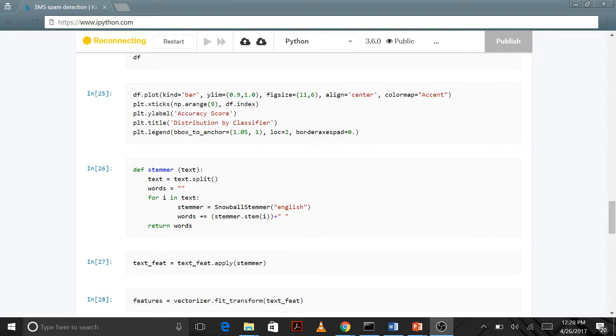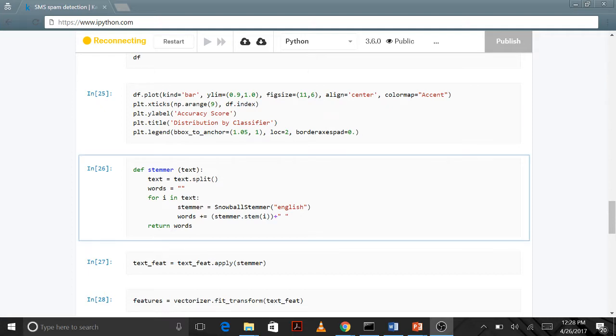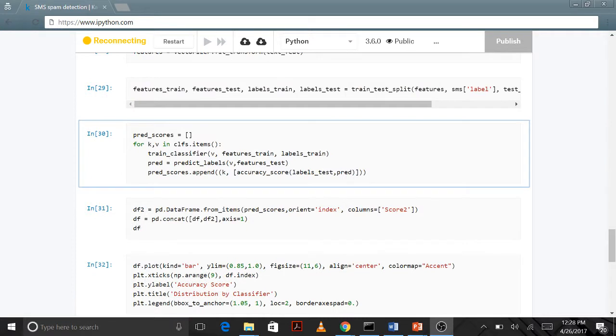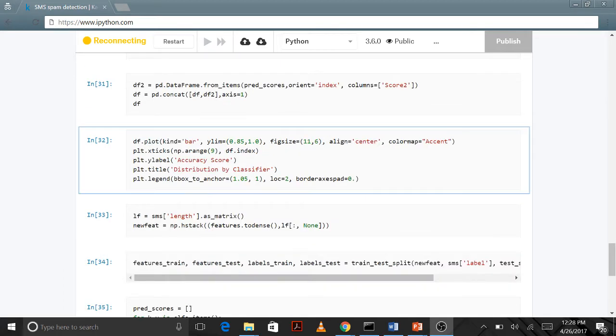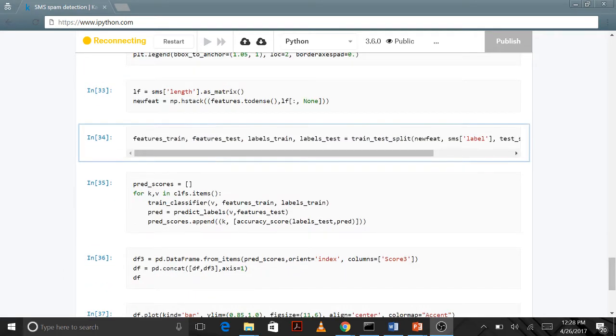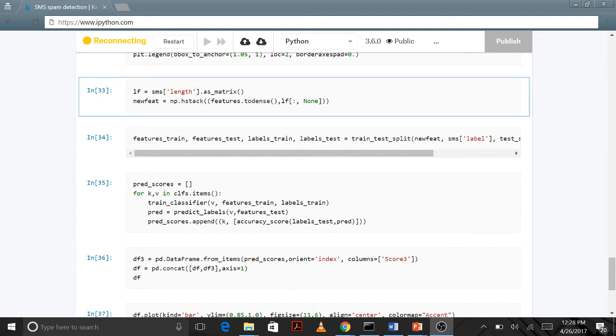In the second case, we have stemmed the words using the snowball stemmer, and again we predicted the scores for our classifier with vectorized words and stemming. In the final case, we also put the message length as one of our features and train the classifier again.